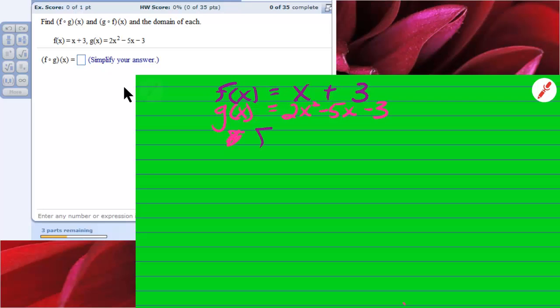Here we go. F of g of x is going to equal 2x squared minus 5x minus 3. That's g of x. And then, plus 3. Remember, f of x was x plus 3. And this, 2x squared minus 5x minus 3 goes in for x.